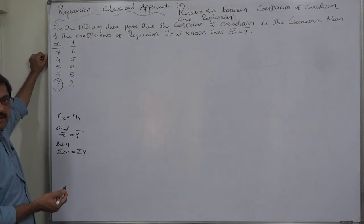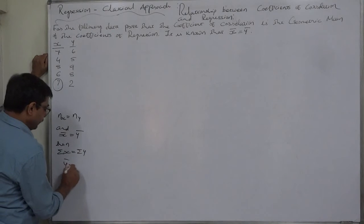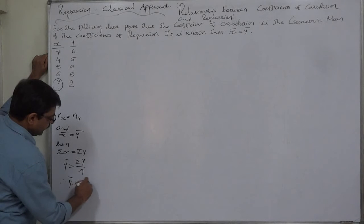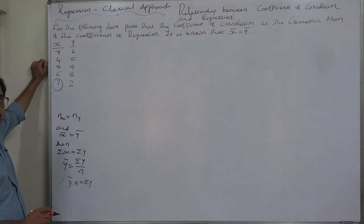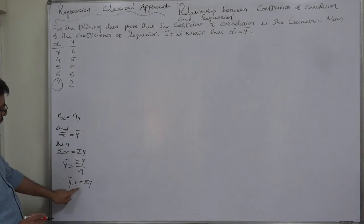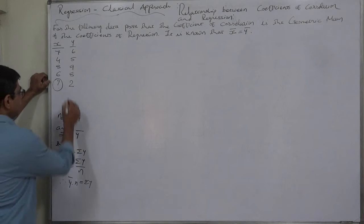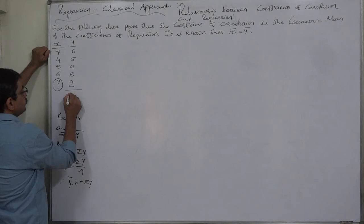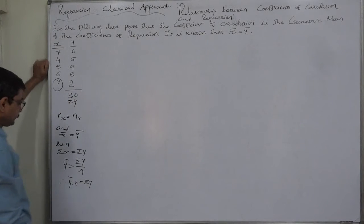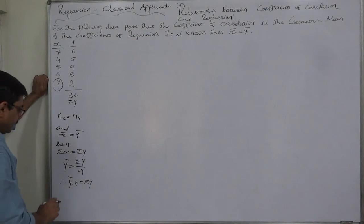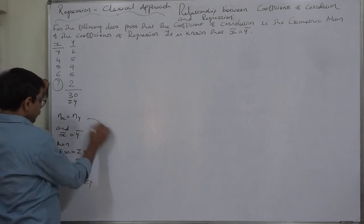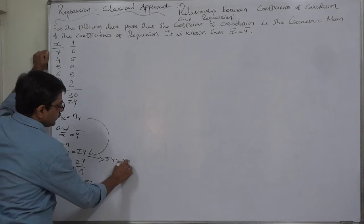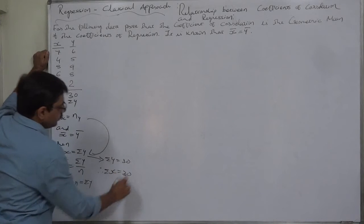Since x̄ = ȳ and n of x equals n of y, it follows that σx must equal σy. We can find σy because all five y values are available. ȳ = σy / n, so σy = ȳ × n. Calculating: 6 + 5 + 9 + 8 + 2 = 30, so σy = 30, and therefore σx = 30.